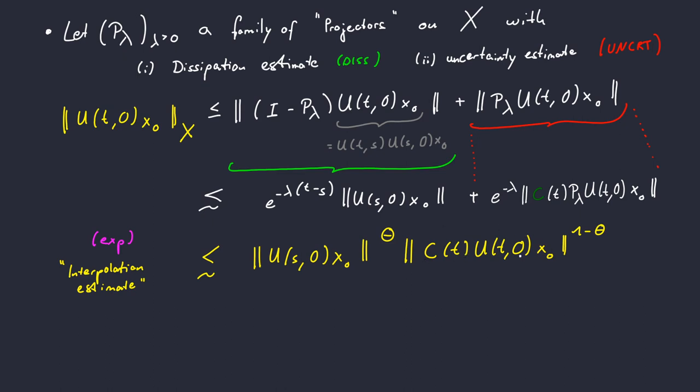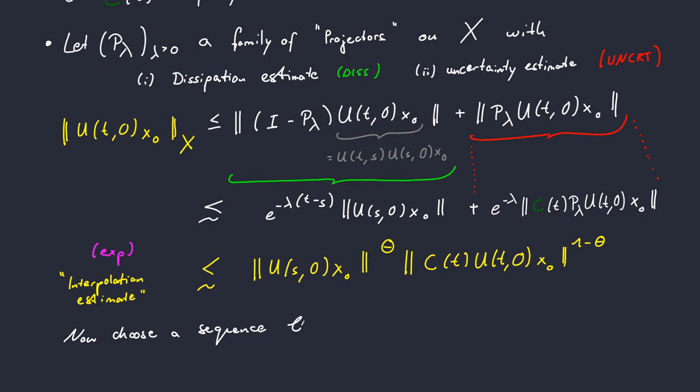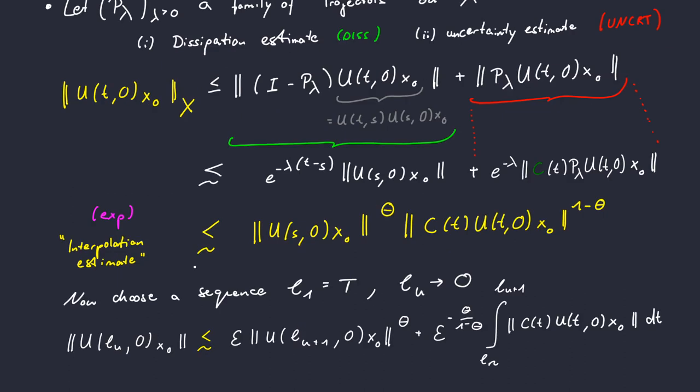Now we choose a sequence that starts with L_1 equals to our final time T and has a limit at zero. Plugging in the sequence in our yellow interpolation estimate, then using Young's inequality with an epsilon and integrating from L_n to L_n plus one, we derive the following estimate. Note that this is a very sketchy proof. Some technical details are not considered in this video.